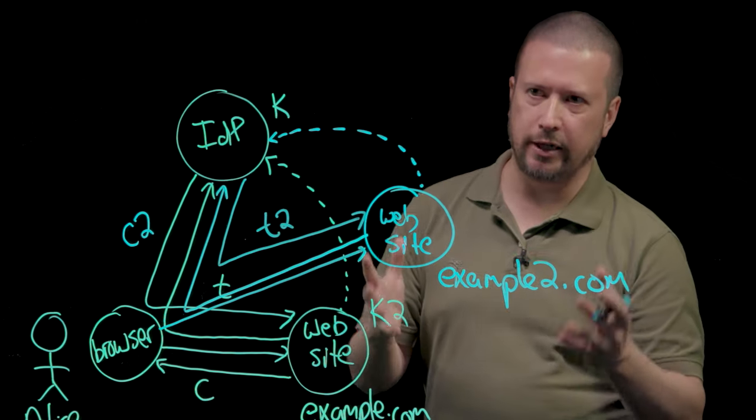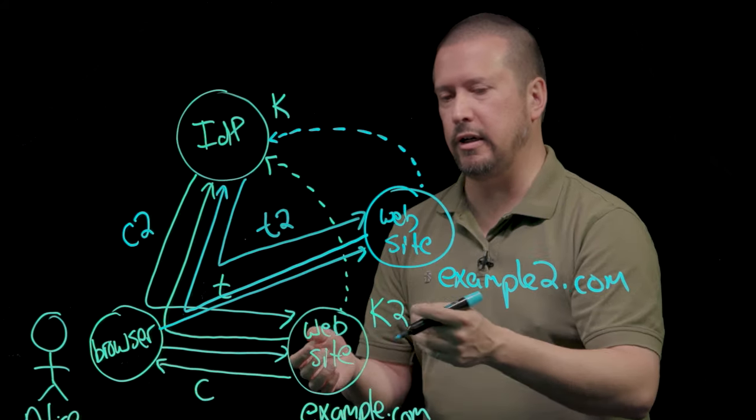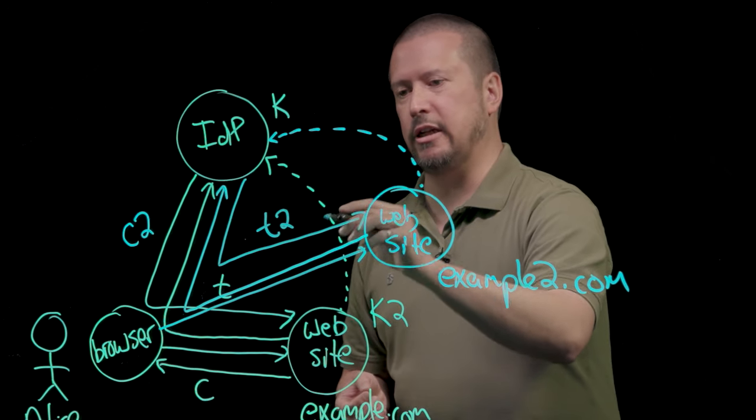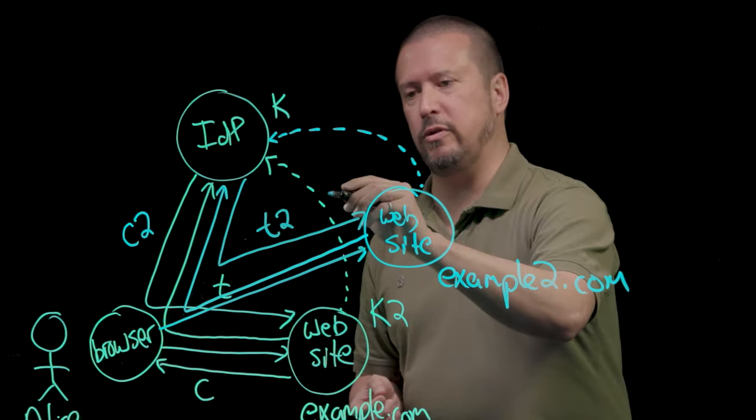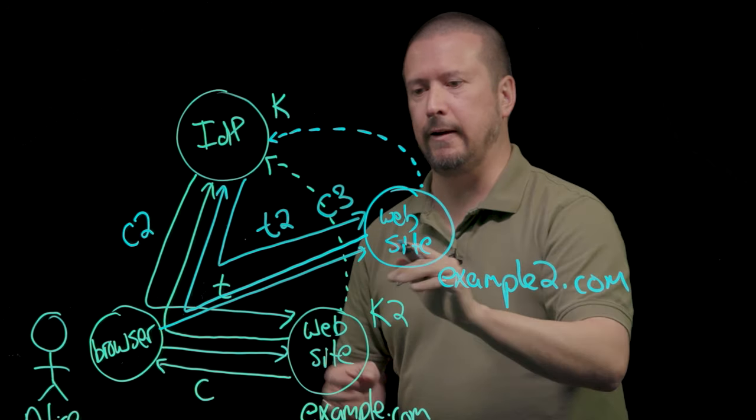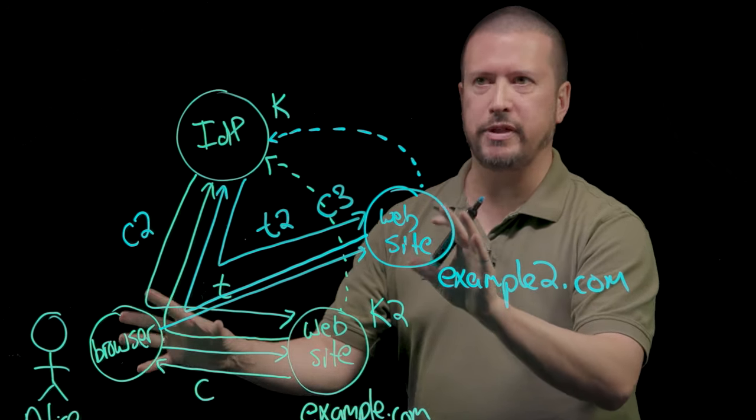And then the website, once it validates the token using the signing key of the identity provider, can set another cookie, this one for example2.com, we'll call it C3, so that she now has a session with this other website.